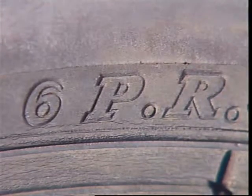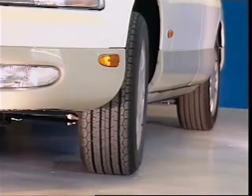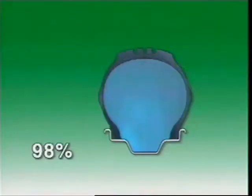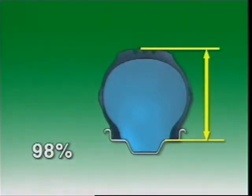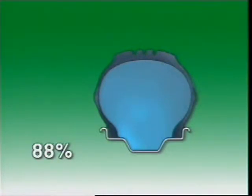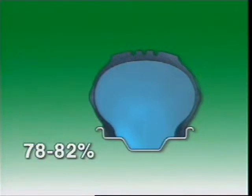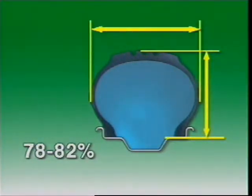Load capacity is indicated by the ply rating, for example 6 PR. The aspect ratio of a tyre is the ratio of its height to its width, usually given as a percentage. The lower the aspect ratio, the wider the tyre is in relation to its height. An aspect ratio of 98% means the section height is slightly less than the section width — called a cushion or balloon tyre. An aspect ratio of 88% gives a lower profile, called a medium low profile tyre.